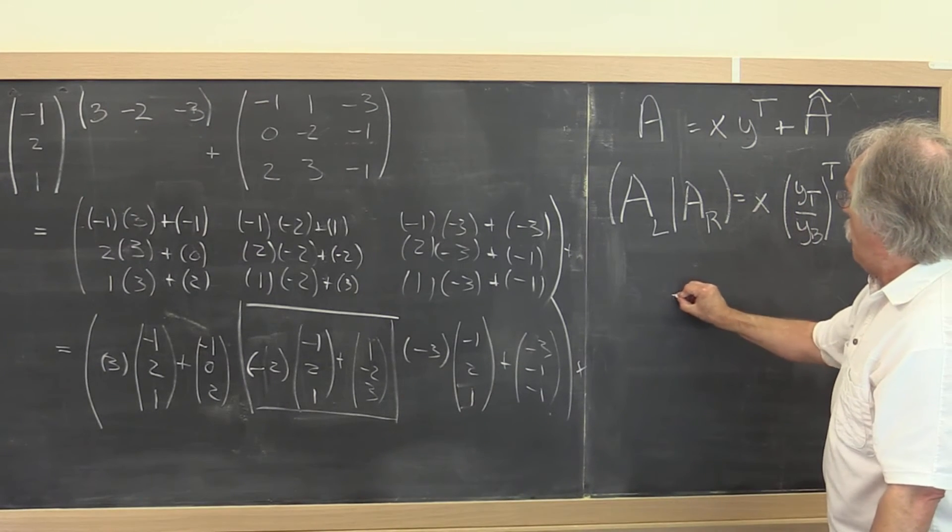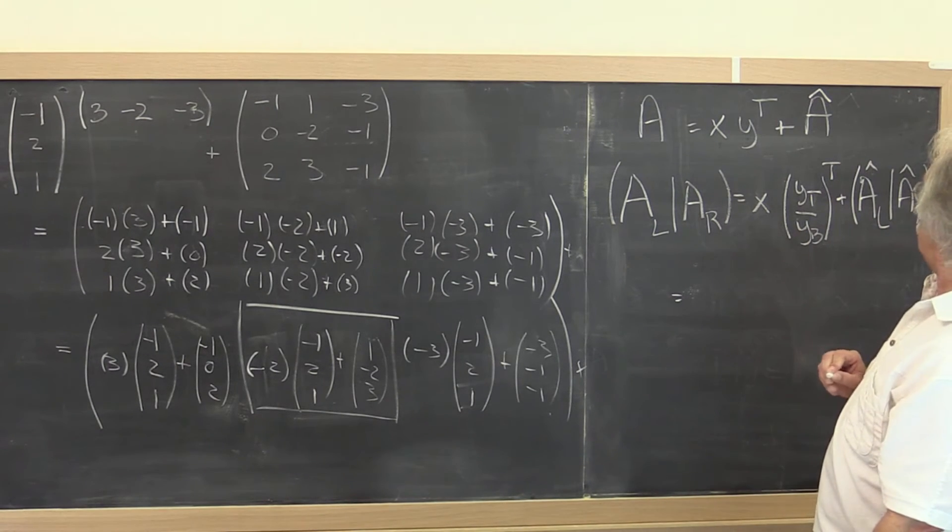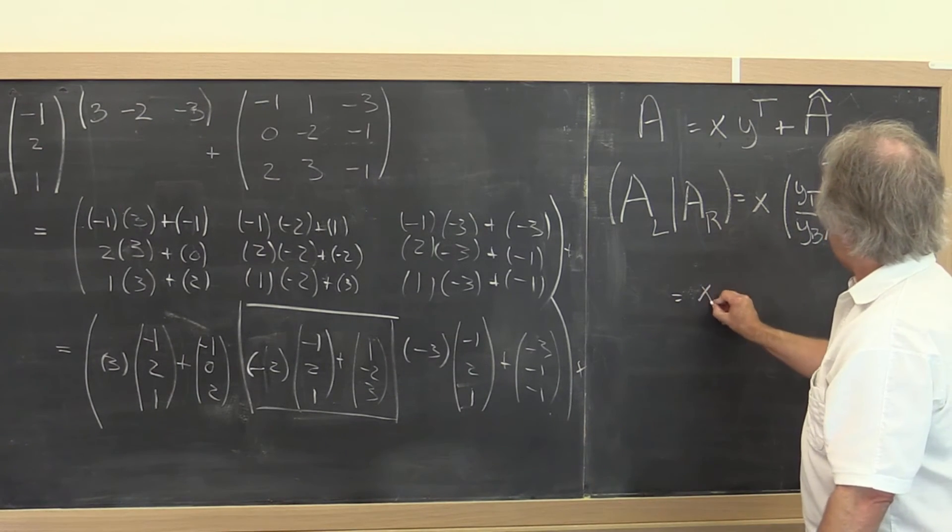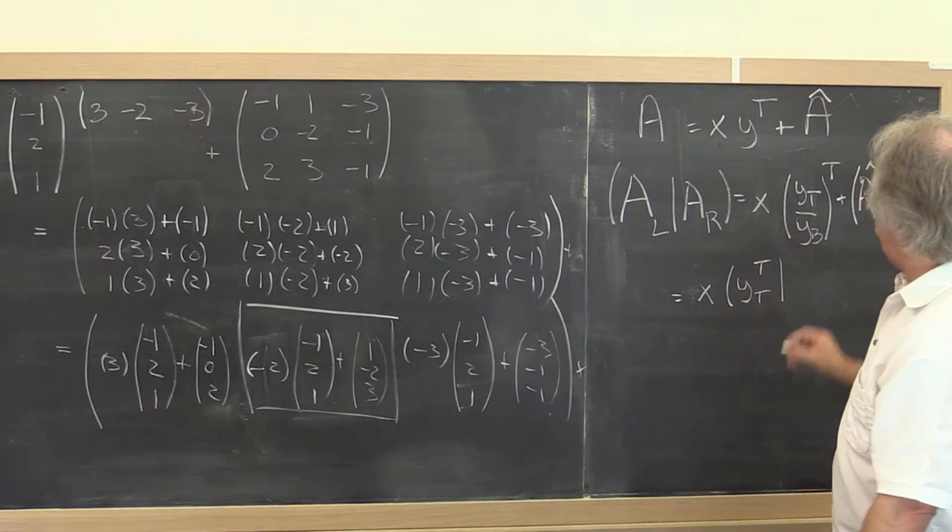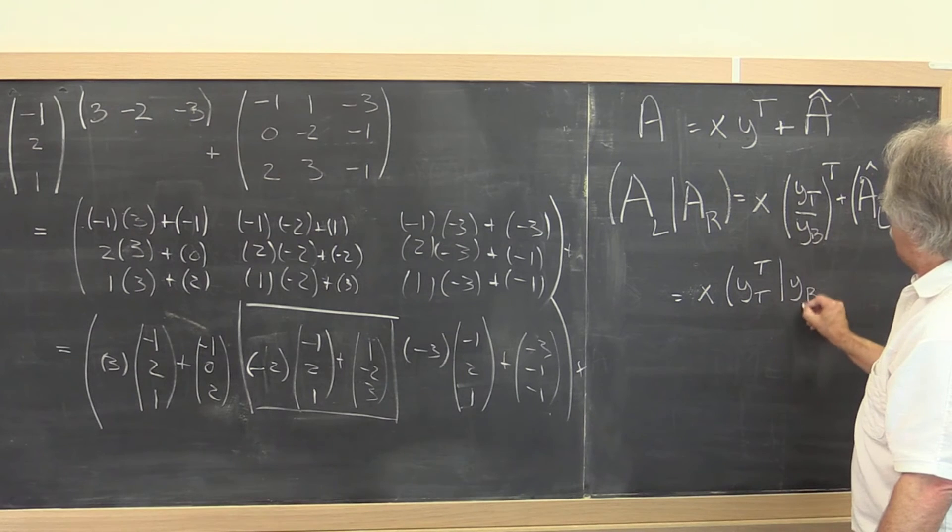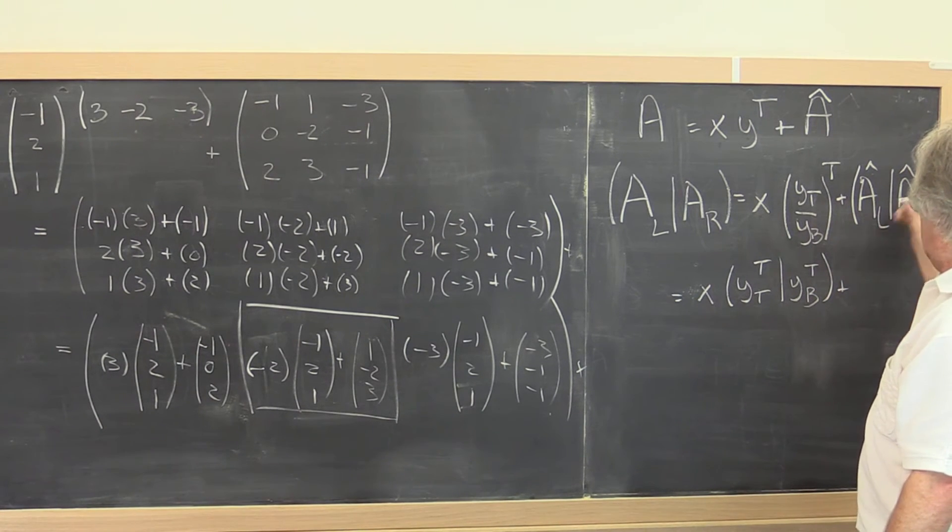And if you now multiply that out, you get, there needs to be a plus there, you get x times y top transpose for the left part, y bottom transpose for the right part, plus this right here.